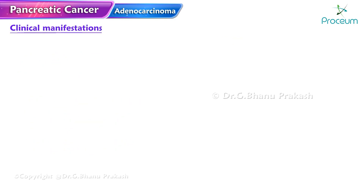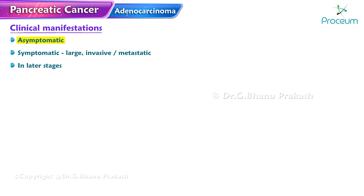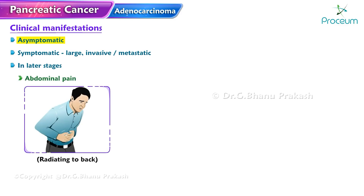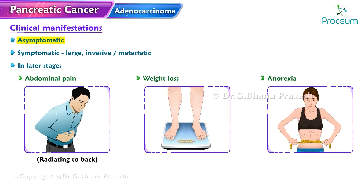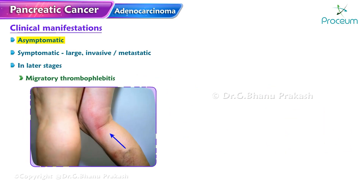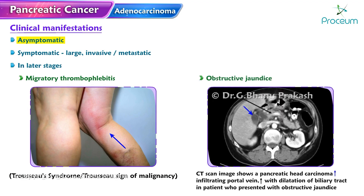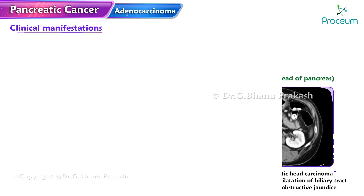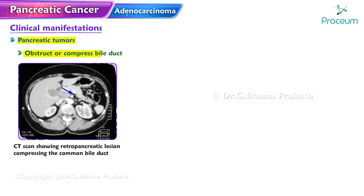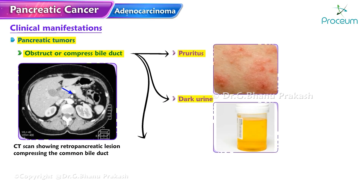Pancreatic cancer is usually asymptomatic until it becomes large, invasive, or metastatic. In later stages, patients present with abdominal pain radiating to the back, weight loss, anorexia, migratory thrombophlebitis (known as Trousseau syndrome), and obstructive jaundice if the tumor occurs in the head of the pancreas. Pancreatic tumors can obstruct or compress the bile duct, resulting in pruritus, dark urine, and pale stools.